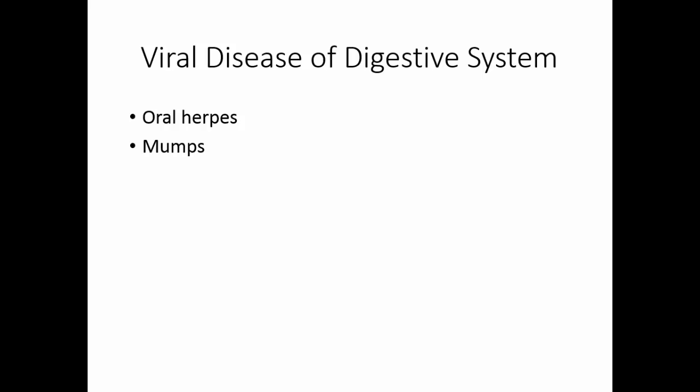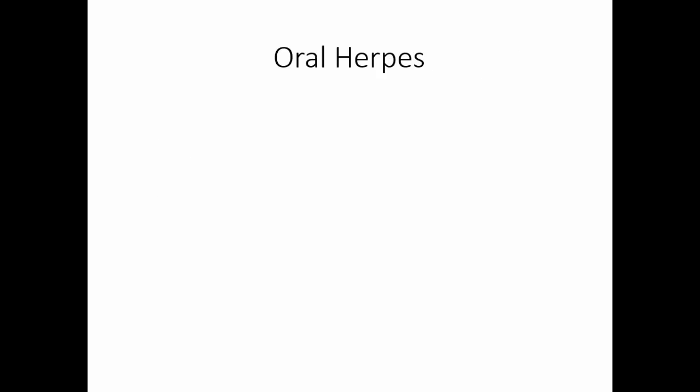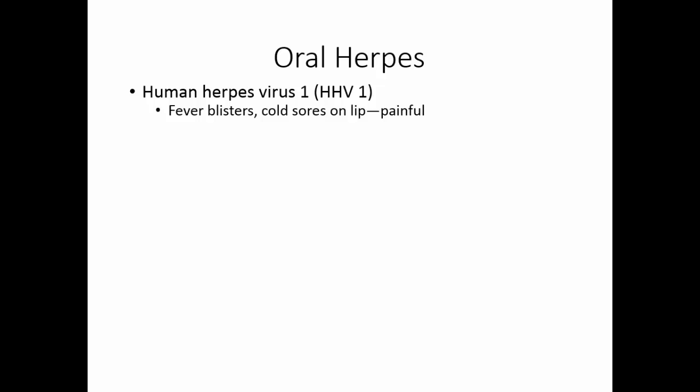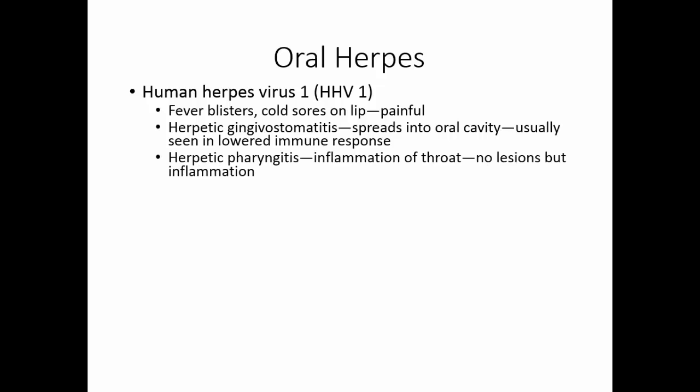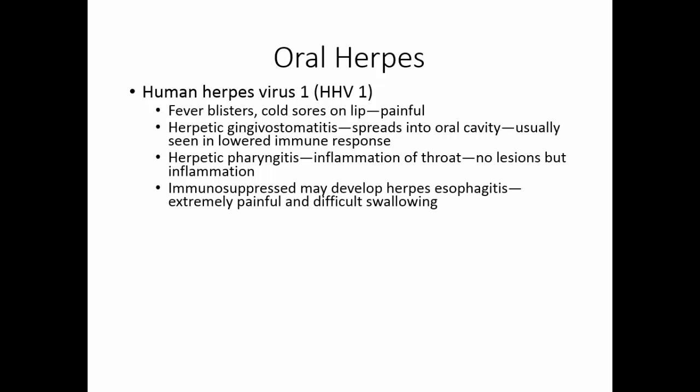There are a few viral diseases of the digestive system: oral herpes, mumps, viral gastroenteritis, and viral hepatitis. Oral herpes is caused by human herpesvirus 1, producing fever blisters or cold sores on the lip that are quite painful. Occasionally the virus moves inside the mouth, causing herpetic gingivostomatitis, usually in individuals with a lowered immune response. Herpetic pharyngitis involves throat inflammation without lesions. In immunosuppressed individuals, herpes esophagitis may develop, with extremely painful lesions in the esophagus that make swallowing very difficult.